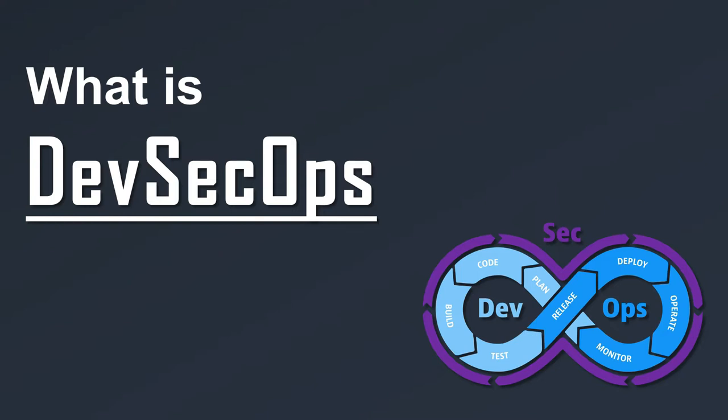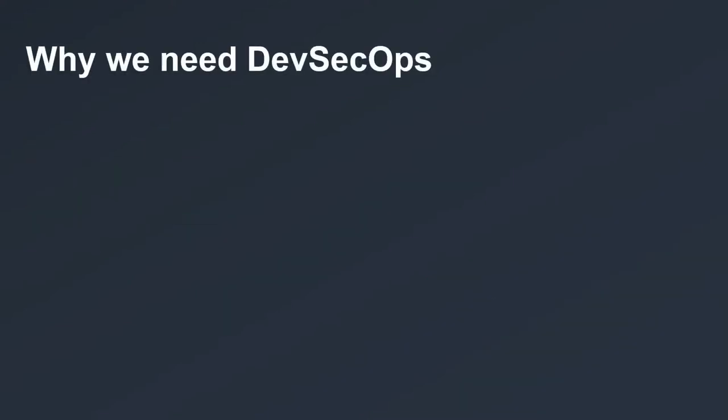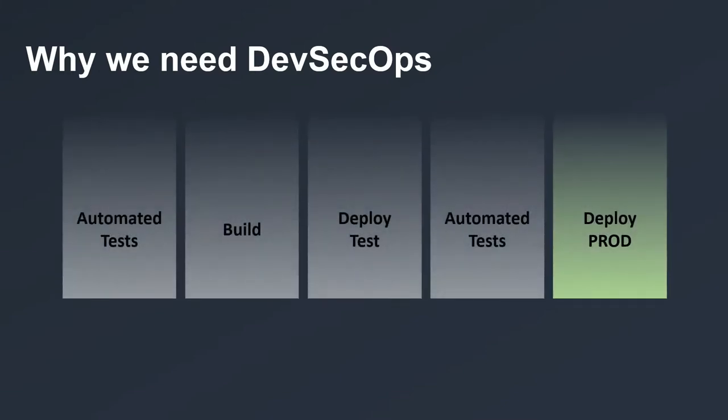Everything is automated and fast. Developers check in the code and an application delivery pipeline starts. The changes are tested with automated tests, a version is built and deployed to the test environment where more automated tests will run. When everything is fine, a green light is given to the new version to be released. This super optimized and automated flow makes application delivery fast without manual effort from developers or testers.